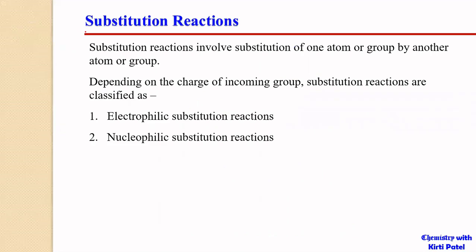Overall, the substitution reactions are a type of chemical reactions. We have four types of chemical reactions: one is an addition reaction, second is an elimination reaction — these we have covered in previous lectures — third is redox reactions, and fourth is a substitution reaction.